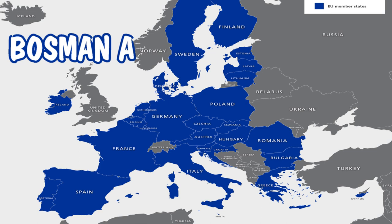This is quickly changing — it has expanded greatly from 1957 to what we're looking at today. The candidates soon getting EU membership are Albania, Montenegro, North Macedonia, Serbia, Turkey, Bosnia and Herzegovina, and Kosovo. All of the remaining Bosman A countries are the ones shown in blue.